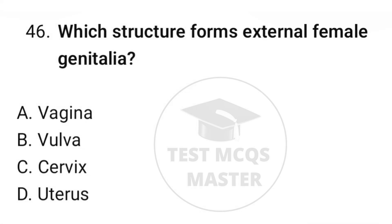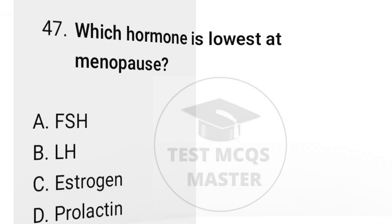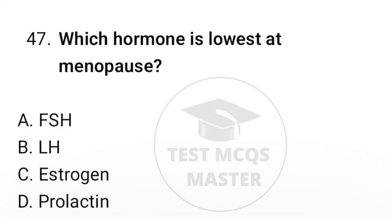Question number forty-six: which structure forms the external female genitalia? The correct option is B, vulva. Question number forty-seven: which hormone is lowest at menopause? The correct option is C, estrogen.